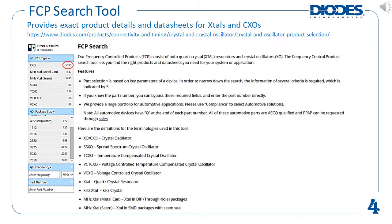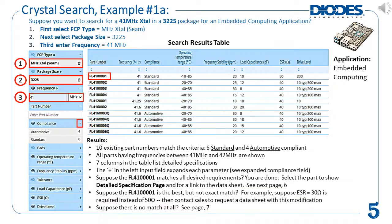Next, I'll show examples of how to use the FCP search tool. Suppose you want to search for a 41 megahertz crystal in a 3225 package for an embedded computing application. Start by selecting the megahertz crystal option in the FCP type field. Next, select 3225 in the package size field, then type 41 into the frequency field. Make sure the units field is set to megahertz, not kilohertz. The results show 10 existing part numbers matching the criteria — six standard and four automotive compliant.